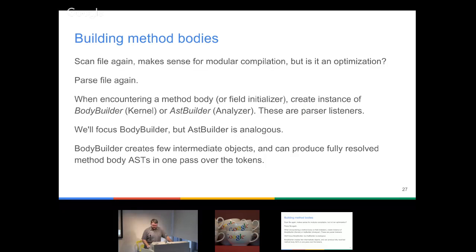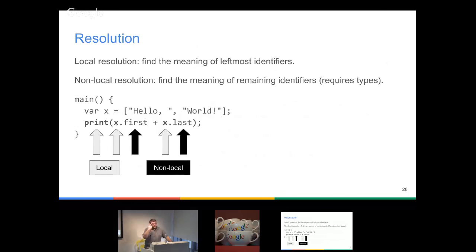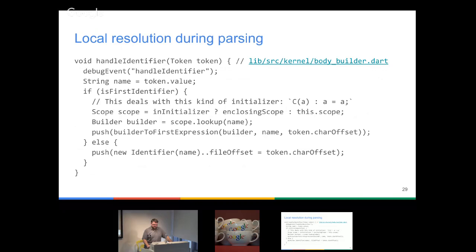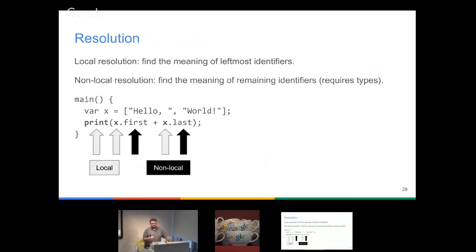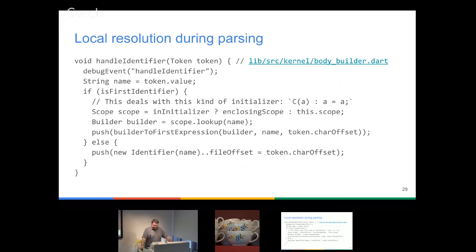Just to remind you about resolution: the resolution part I've implemented is the local one — the black arrows would require more type information. That type information isn't generally available in Dart as I know it, but in strong mode it should be there. That's why it's tied to strong mode. It's not really interesting without strong mode because strong mode gives guarantees about this. If you don't have strong mode, they are all dynamic calls unless you've done type inference on them.